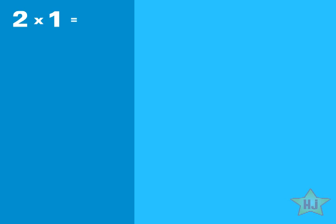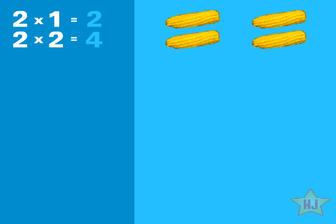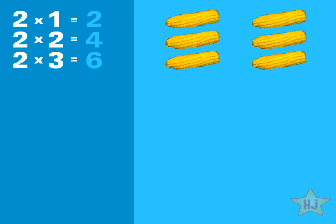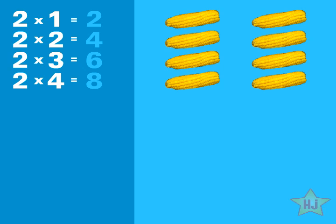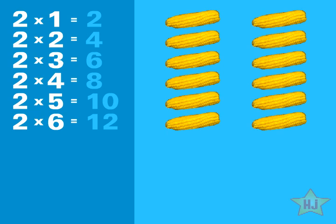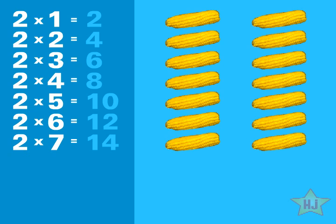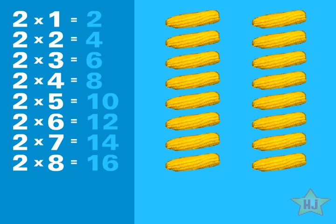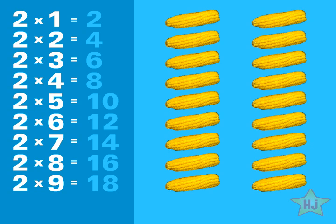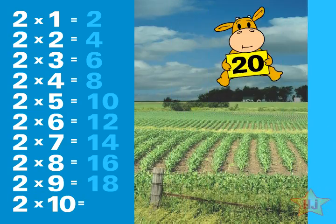2×1=2, 2×2=4, 2×3=6, 2×4=8, 2×5=10, 2×6=12, 2×7=14, 2×8=16, 2×9=18, 2×10=20.